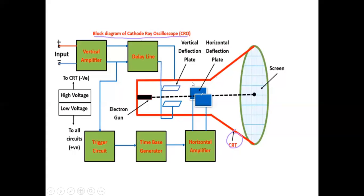The delay line output is given to the vertical deflection plate. According to that, the plates will be deflected from each other. The electron gun strikes the electrons on the CRT screen. This is your block diagram.